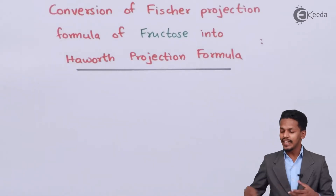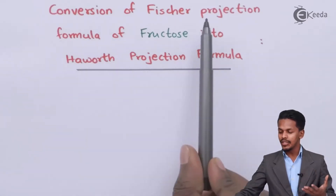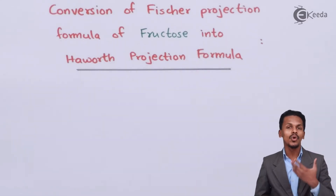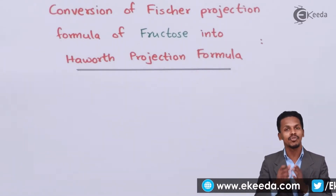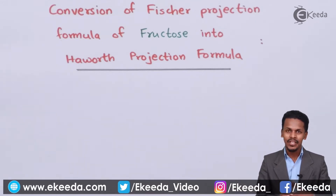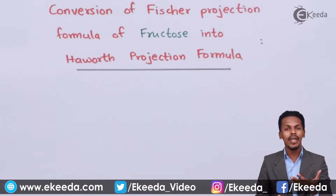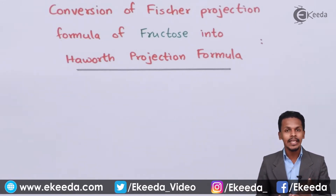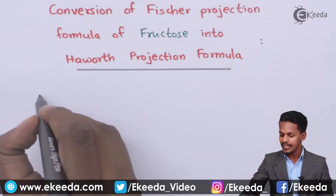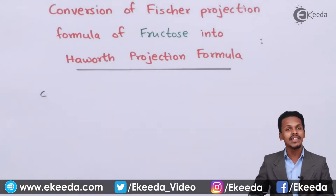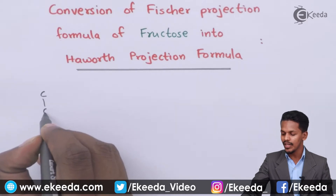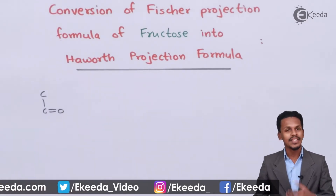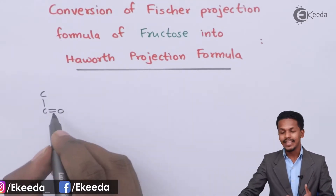Before understanding the conversion of the Fischer projection formula for fructose to the Haworth projection formula, it is very important for us to understand the structure of fructose. Fructose consists of six carbon atoms, and the second carbon atom is the one which is basically the carbonyl group.